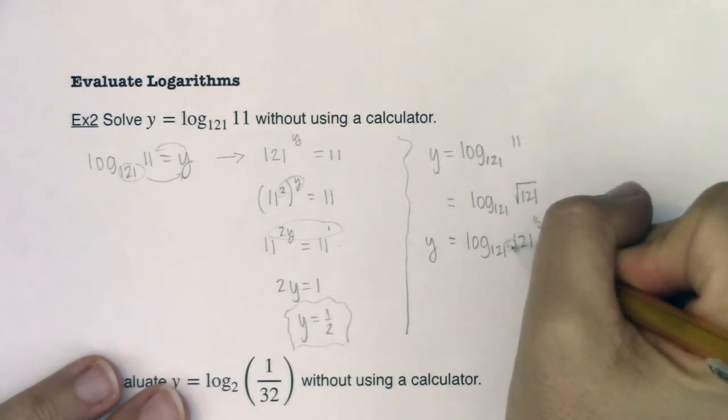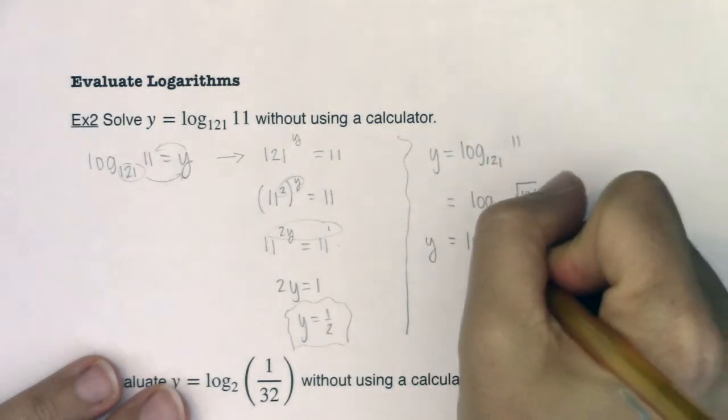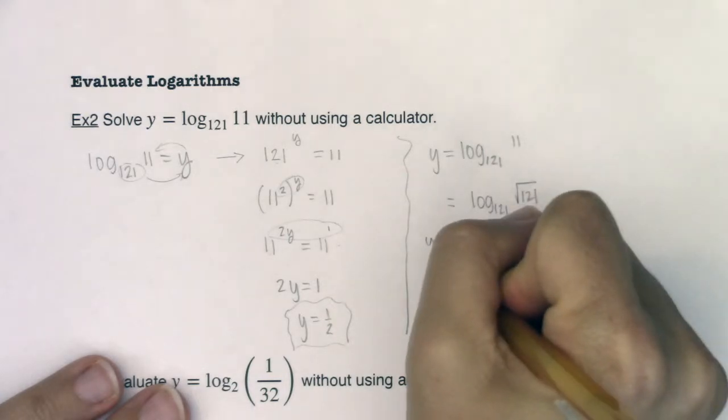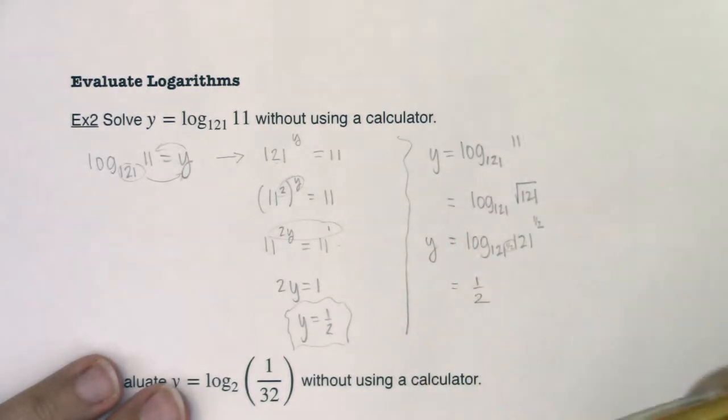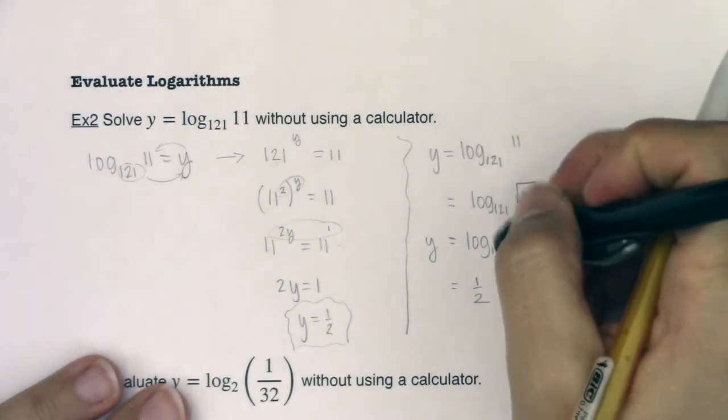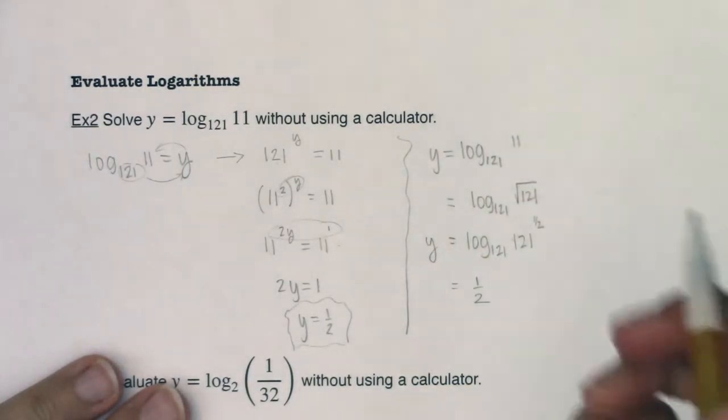Well, I quite literally need 1 half, right? 121 to the 1 half is equal to 121 to the 1 half, so this is just 1 half. And this kind of brings up another property of logarithms.